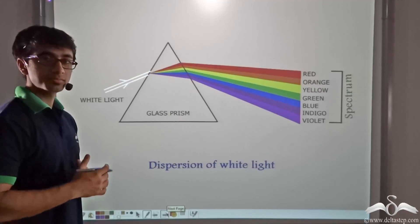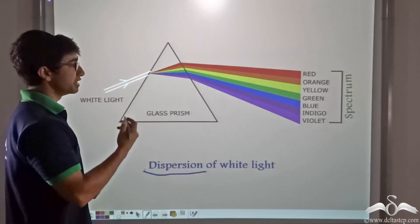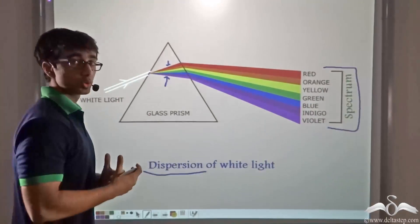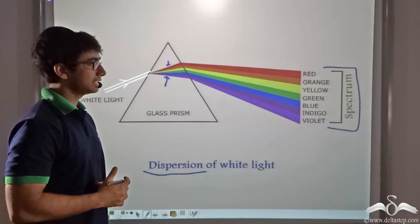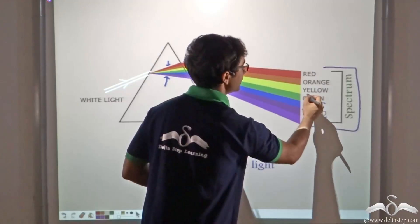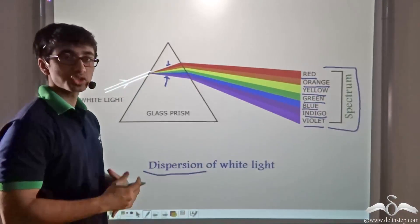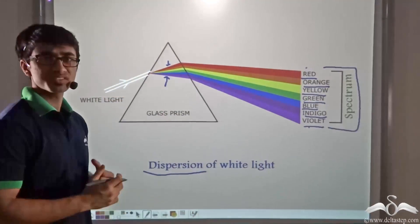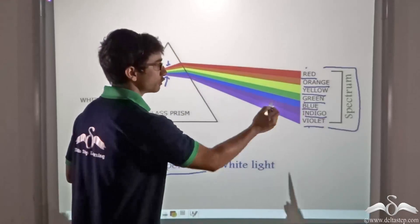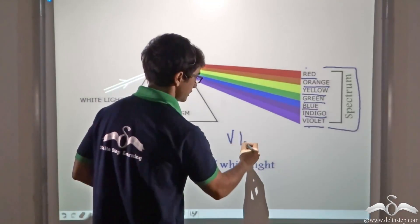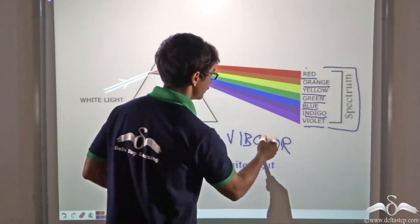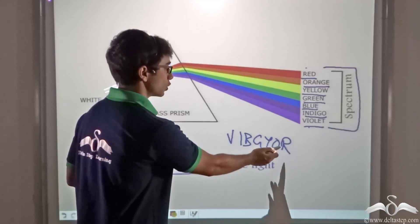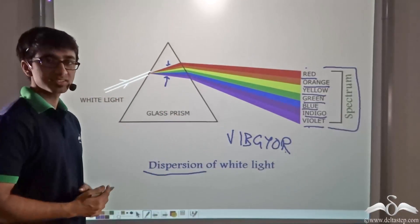So we use a prism for the dispersion of white light. The breaking down of white light into its seven constituent colors — known as the spectrum — is called dispersion of white light. After dispersion, we obtain violet, indigo, blue, green, yellow, orange, and red. This is known as the spectrum of white light. An easy way to remember these colors is the mnemonic VIBGYOR, where V stands for violet, I for indigo, B for blue, G for green, Y for yellow, O for orange, and R for red.